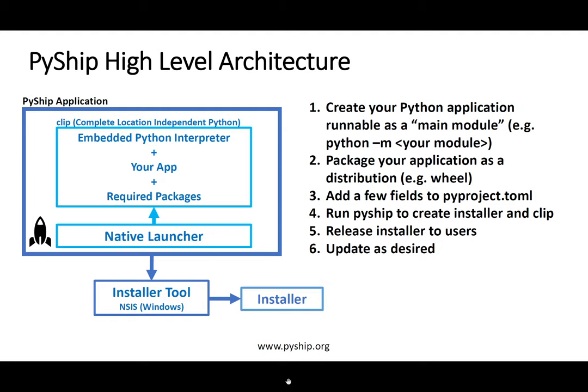Once you have your application as a main module in a Python distribution, such as a wheel, you need to tell PyShip a couple of things. First, you need to tell it your application name. It's best to do that in the pyproject.toml file. If you're using Flit, this has been already created for you. Also, you should tell PyShip if your application is a GUI or command-line application in the pyproject.toml file. Once you've done that, you're ready to run PyShip.